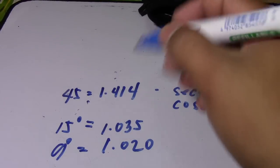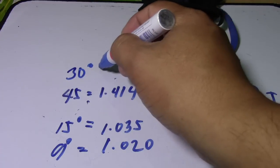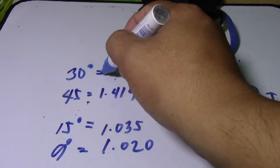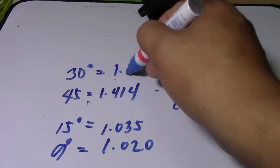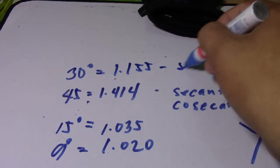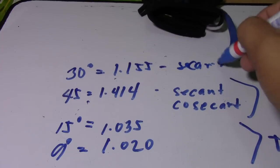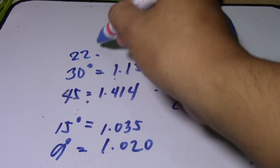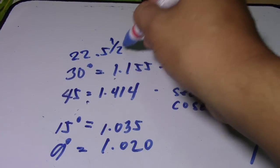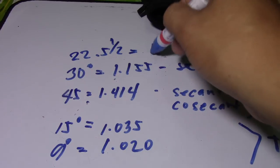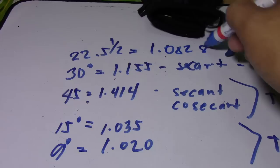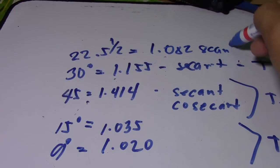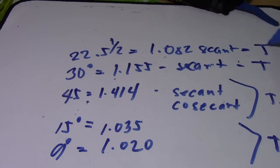For 30 degrees, you use 1.155 — this is also the secant, same method to find the travel. For 22.5 degrees, or 22 and a half degrees, you use 1.082 — this is also the secant to find the travel.